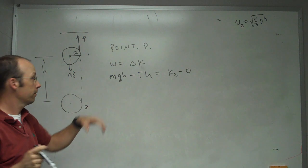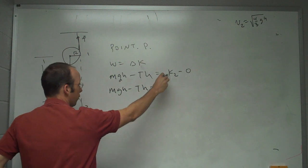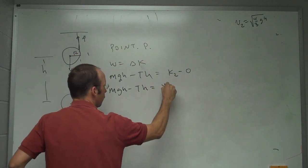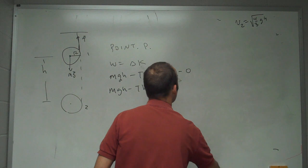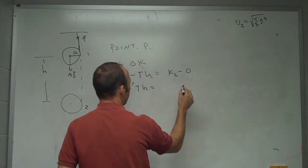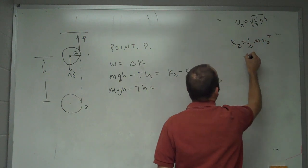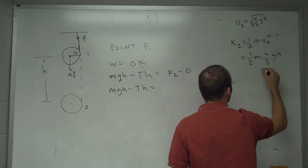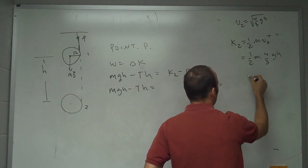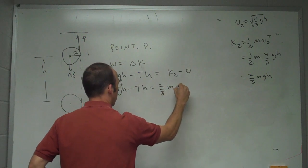So I have mgh minus Th equals the final kinetic energy. Let's see. K2 equals one-half m v2 squared. So it's going to be one-half m, that squared is going to be four-thirds gh. That doesn't seem right, but I'll continue anyway. So it's going to be two-thirds mgh. Two-thirds mgh.